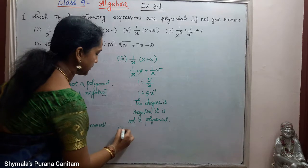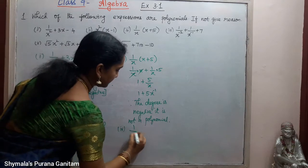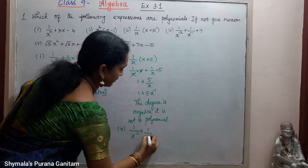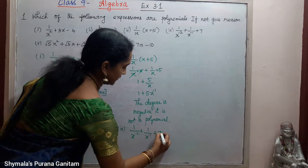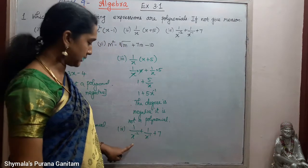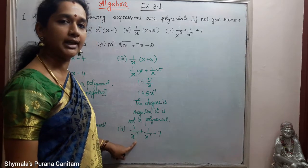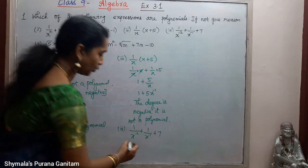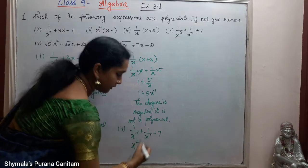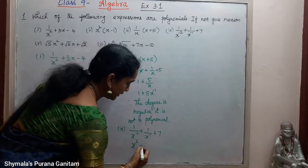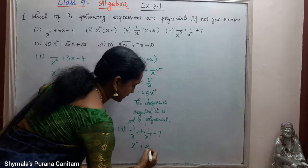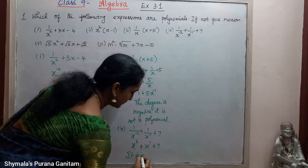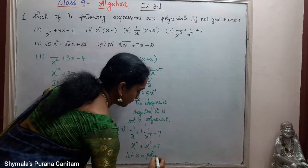Fourth one is x⁻² + x⁻¹ + 7. When we bring x⁻² from the denominator to the numerator, it becomes x². So we get x² + x + 7, and all powers are positive. It is a polynomial.